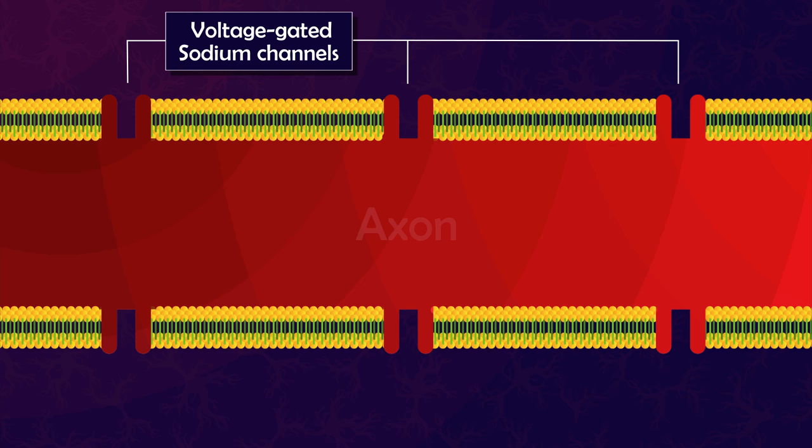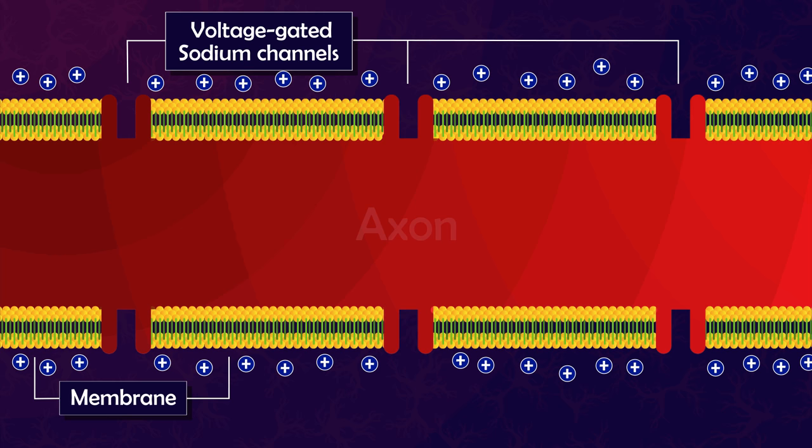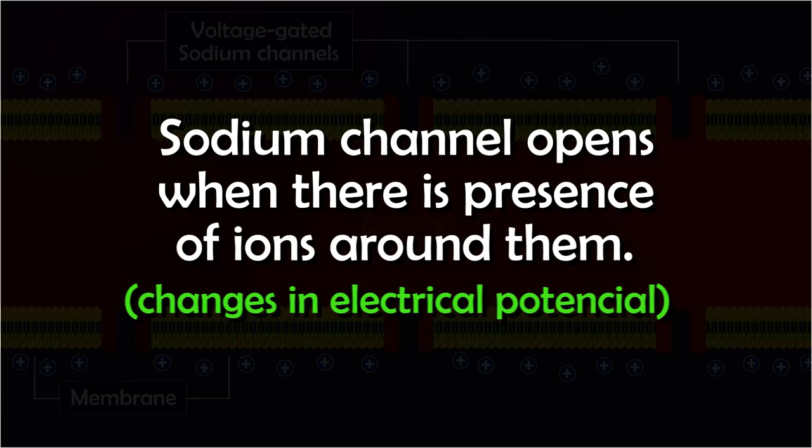To overcome this problem, there are voltage-gated sodium channels along the membrane that can allow positive ions or sodium ions to enter and maintain the strength of the impulse. Since they are voltage-gated, they open like doors in the presence of ions around them.